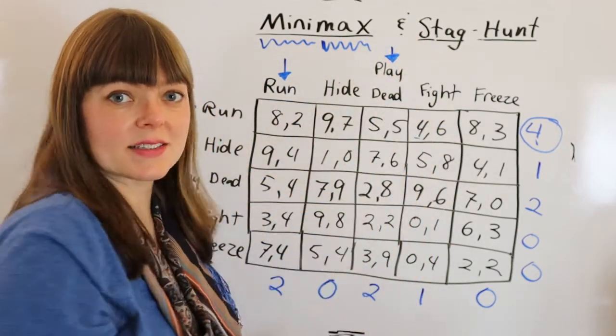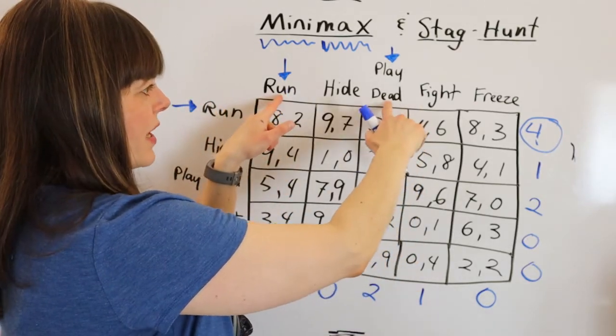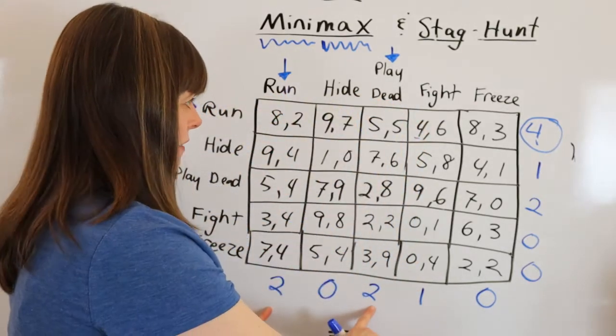The best, the maximum of the worst case scenarios is 2, and there's 2 strategies, run or play dead, that lead to that payoff of 2.